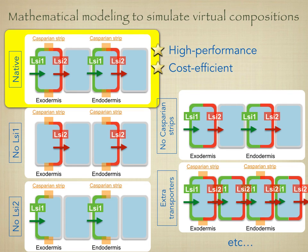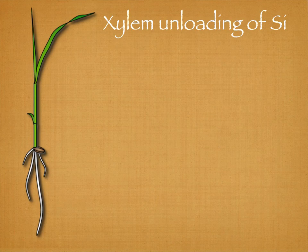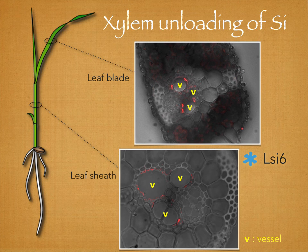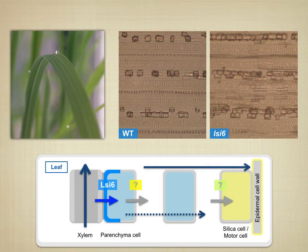Furthermore, we found that the Casparian band has an important role in rice for the efficient uptake of silicon by preventing it from moving back to the outer apoplast. Silicon in the xylem sap is unloaded by LSI-6, the only homologue of LSI-1 in the rice genome. LSI-6 is localized at the xylem parenchyma cells and also shows polarity facing toward the xylem vessel in the leaf sheaths and leaf blades, and is responsible for transporting silicon out of the xylem.